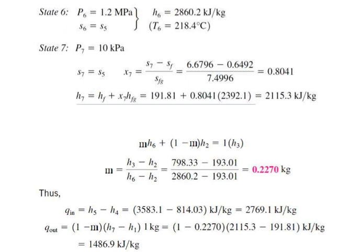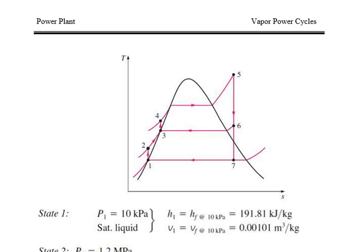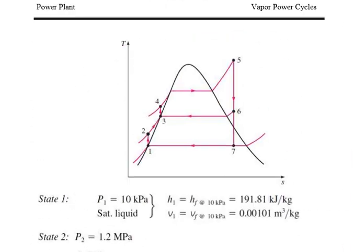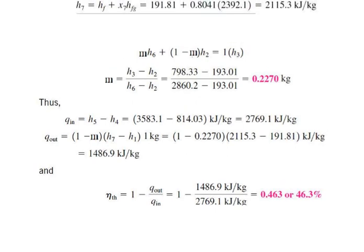After studying both open and closed feed water heaters, we compare their advantages and disadvantages. Open feed water heater: simple and inexpensive. Closed feed water heater: complex and expensive due to the internal tubing network. In terms of heat transfer, the open feed water heater is more efficient due to direct contact, whereas the closed feed water heater is less efficient since the two streams are not in direct contact.